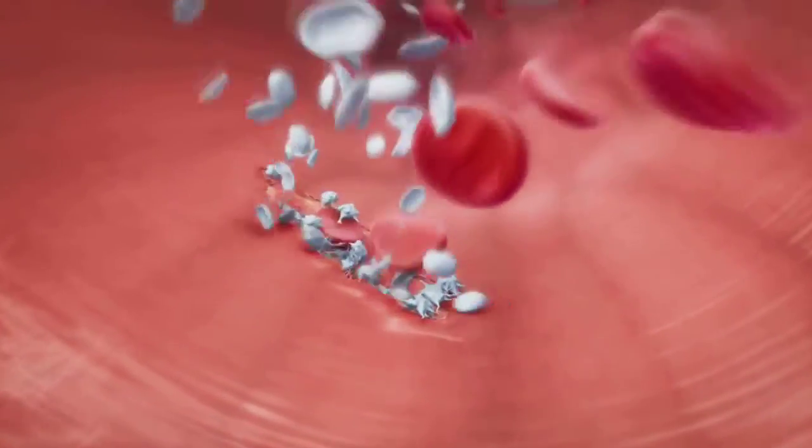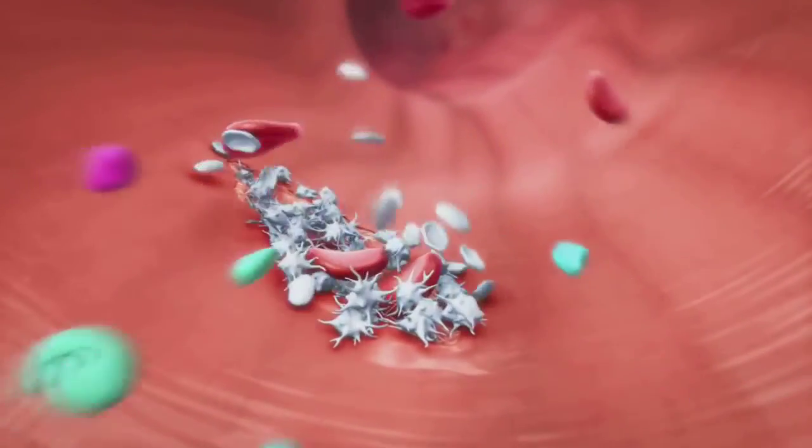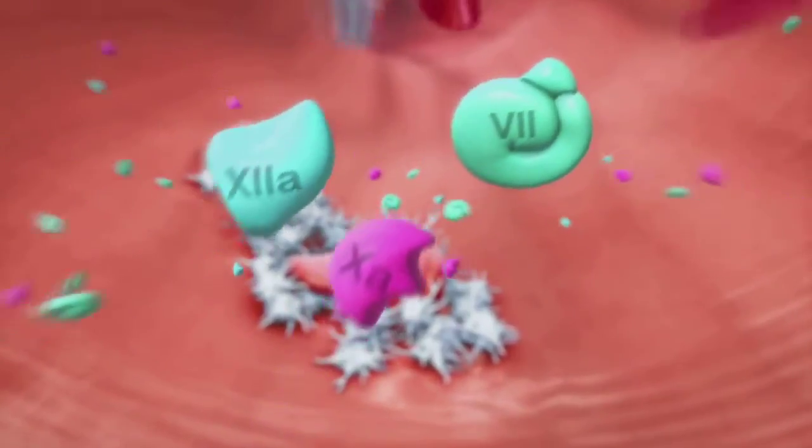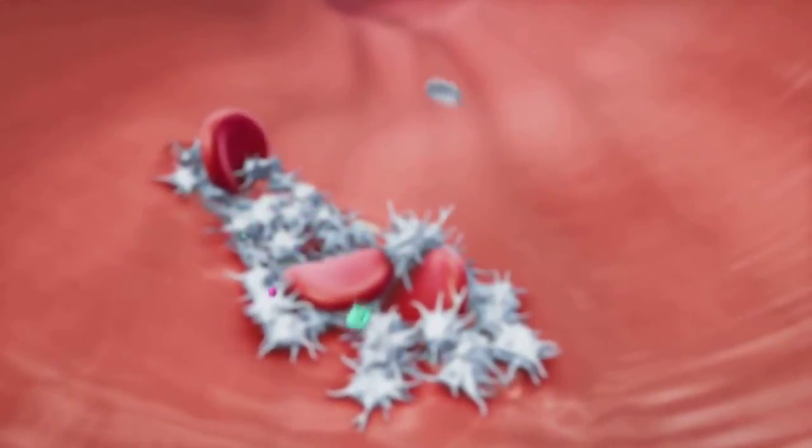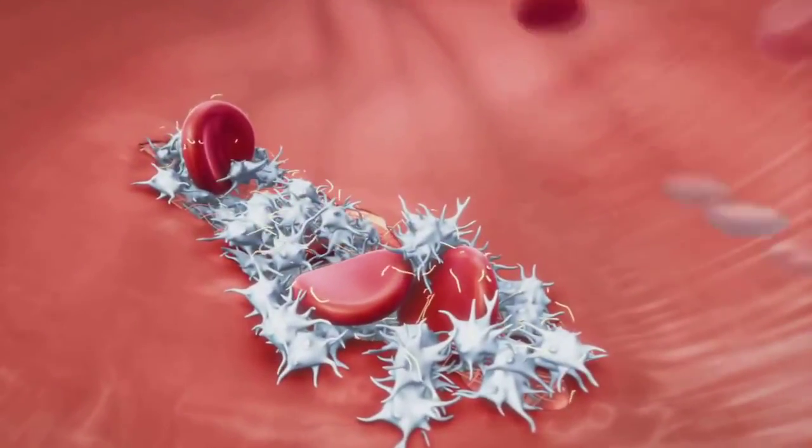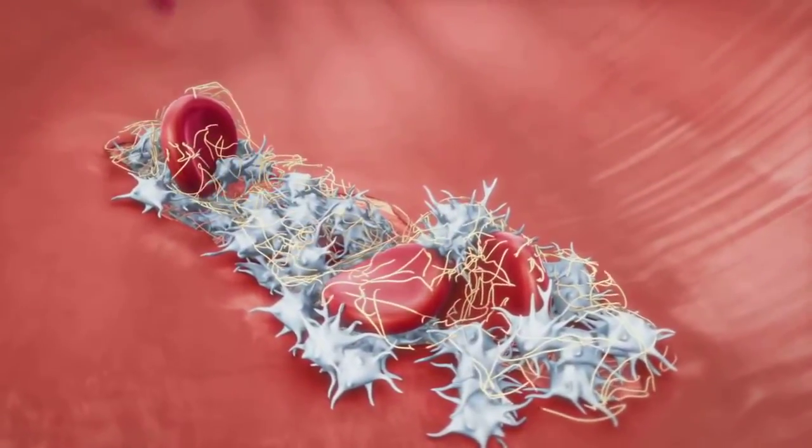The platelets are responsible for a first sealing of the tear. Then, a number of coagulation factors are activated, leading to the formation of fibrin strands which stabilize the growing clot.